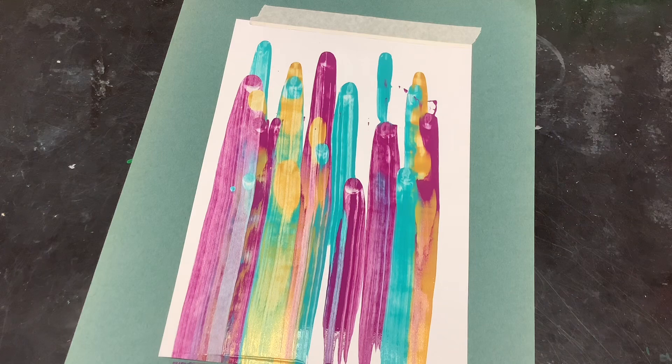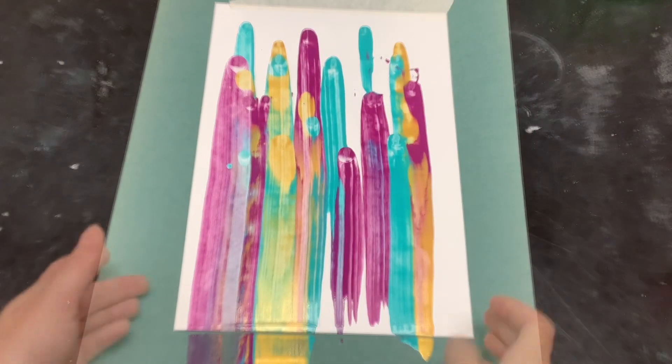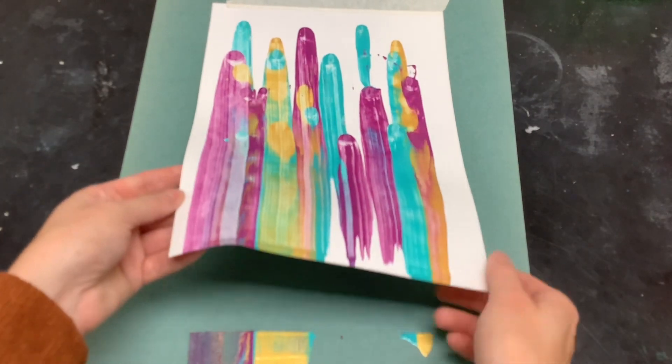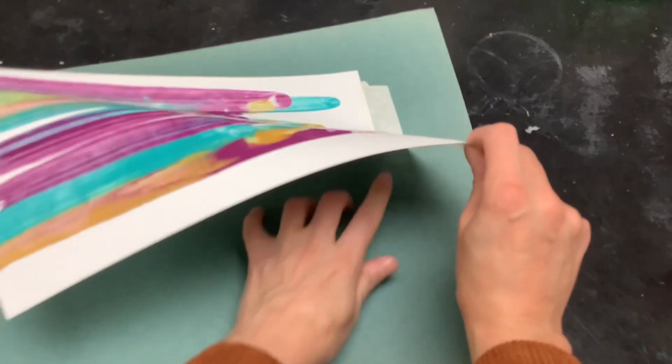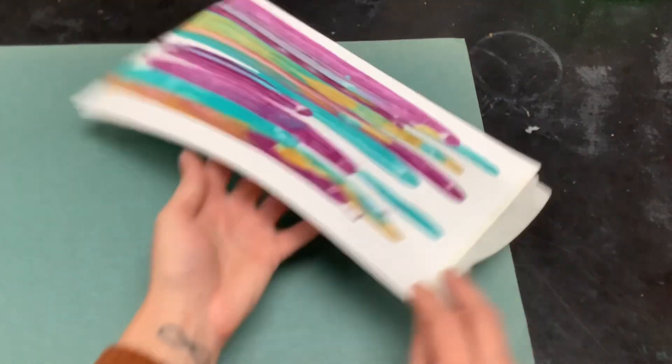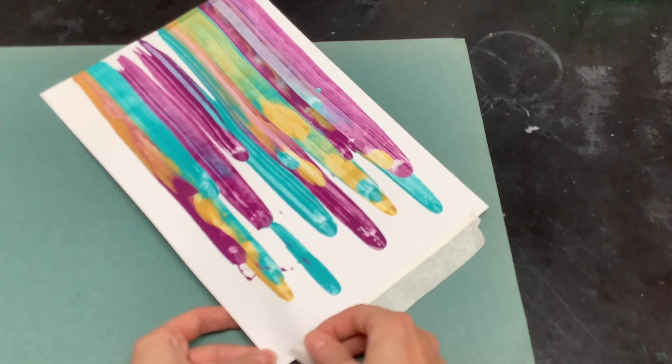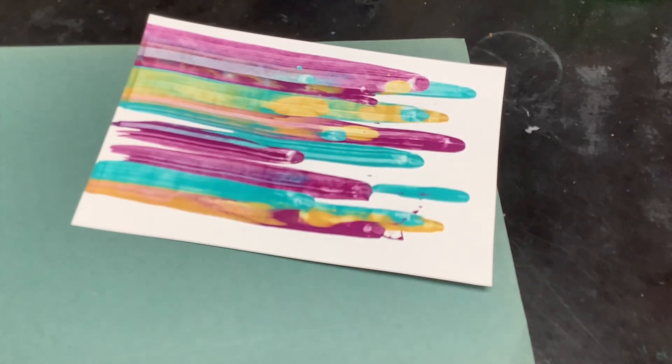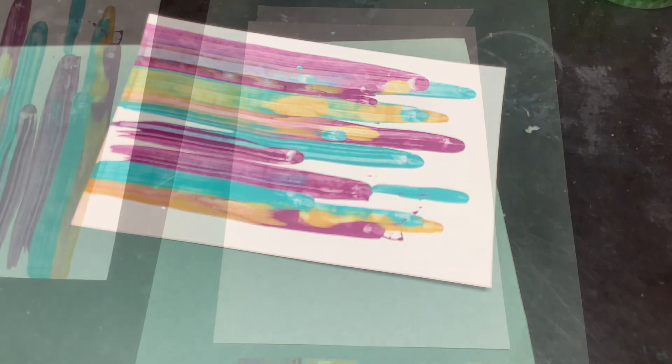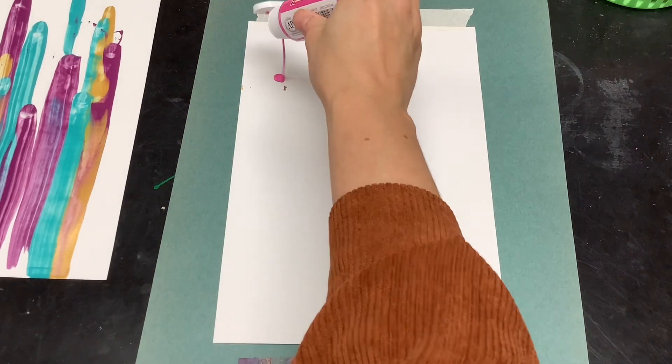Once you're finished with your first painting, you can carefully peel it off of the placemat behind it and take the tape off. Then if your tape is still good you can reuse it for your second piece of paper. Otherwise you may get a new piece of tape.